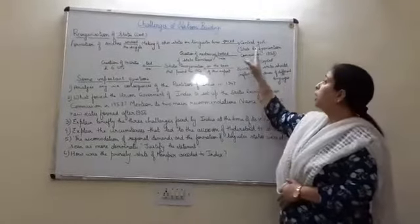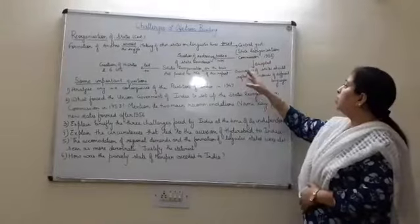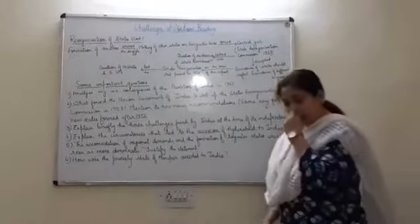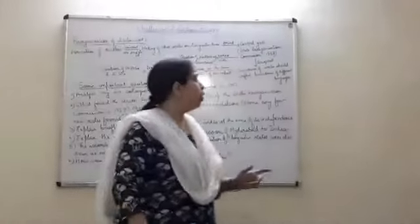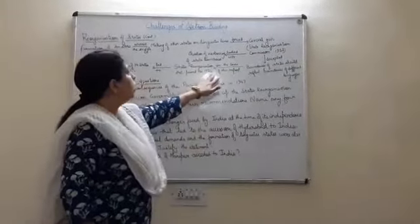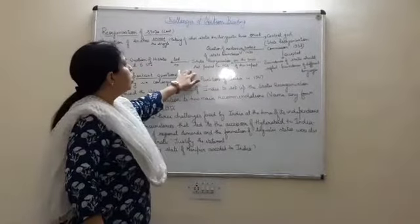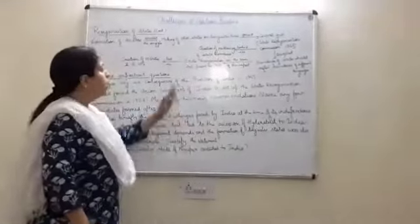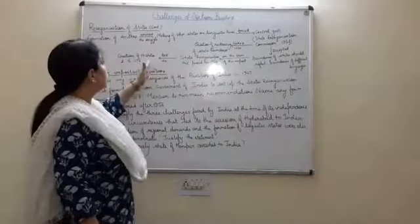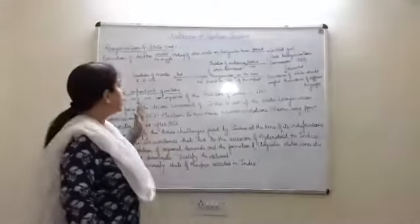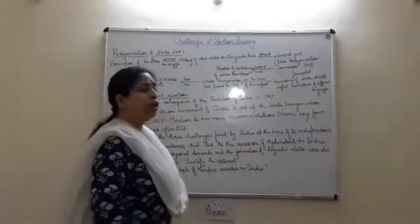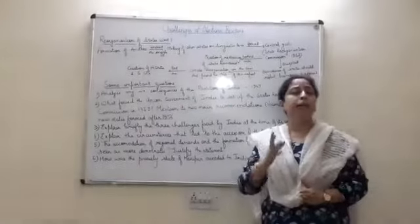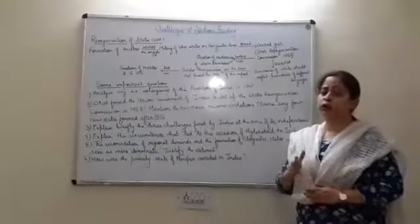Moreover, in its report, it also accepted that boundaries of the states should reflect the boundaries of different languages. And it was this report of the State Reorganization Commission because of which the State Reorganization Act was passed in 1956. This act led to the creation of 14 states and 6 union territories. So finally we could say the linguistic principles only became the basis of the formation of states.